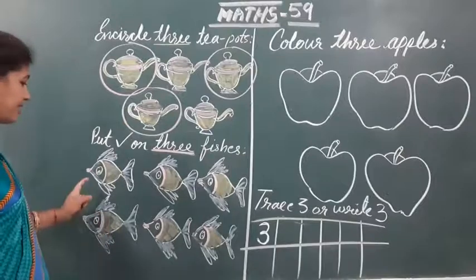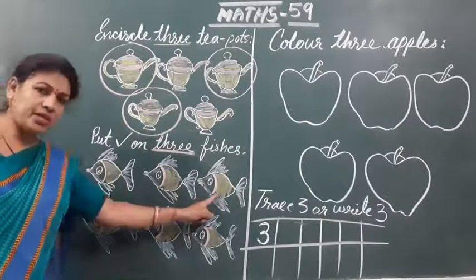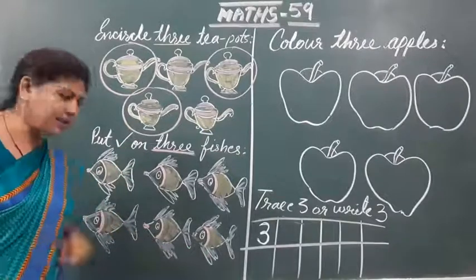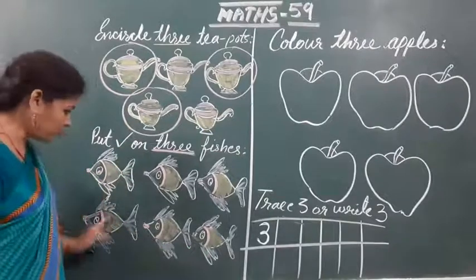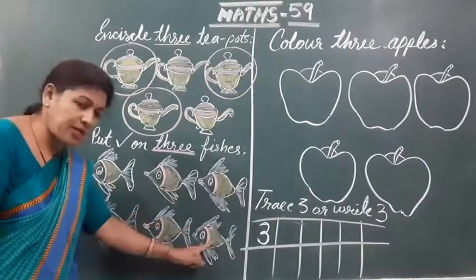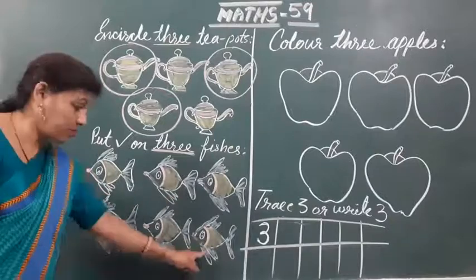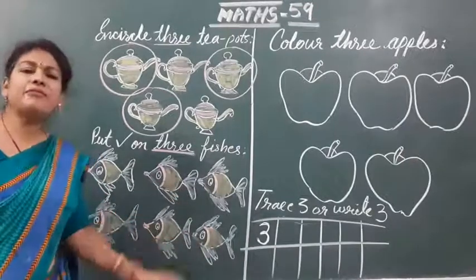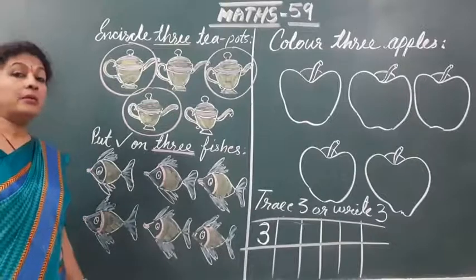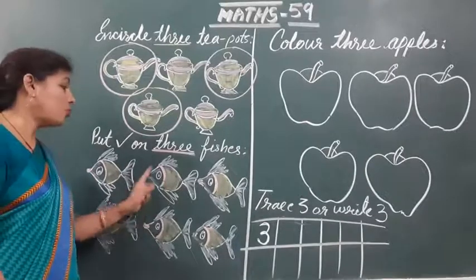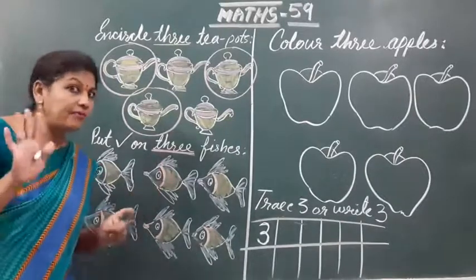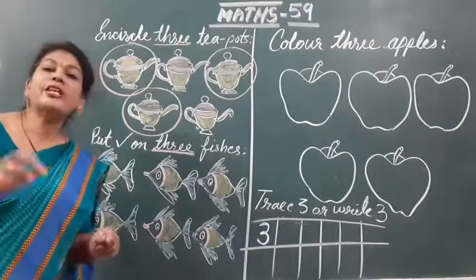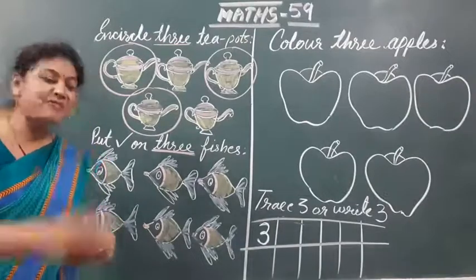Then we will select 1, 2, 3. And we can select 1, 2, 3 in various combinations — that is your choice. आपको कोई से भी 3 choose करना है। 3 से 4 नहीं होना चाहिए, नाहीं 2 — only we will select only 3 fishes.